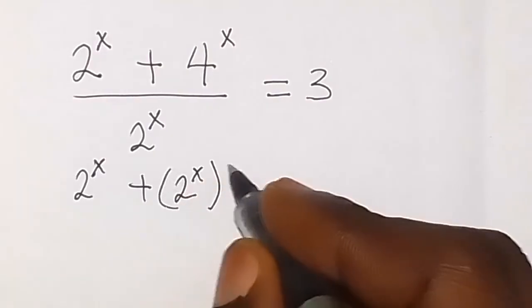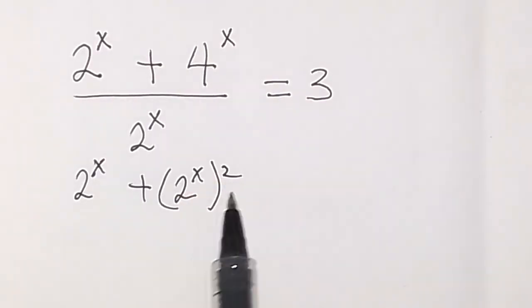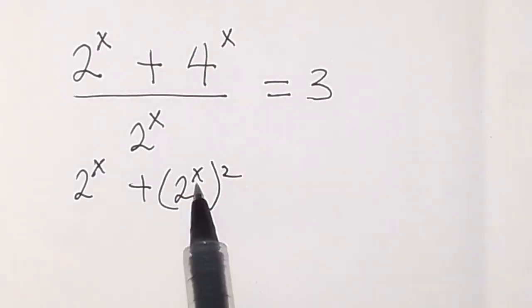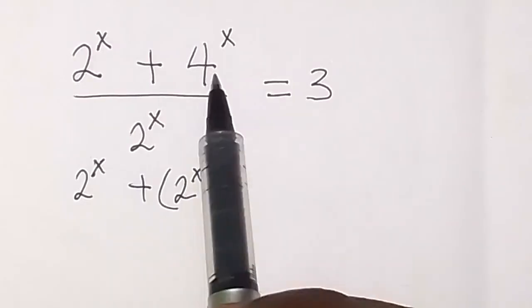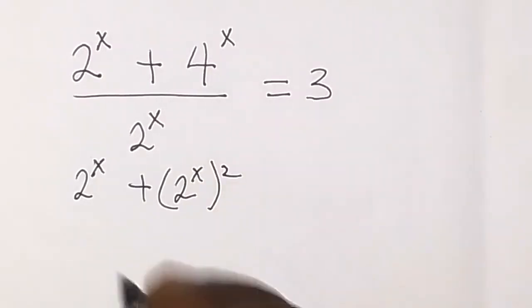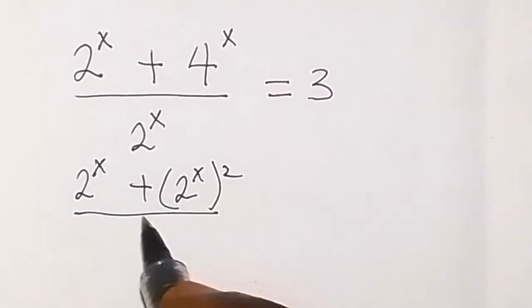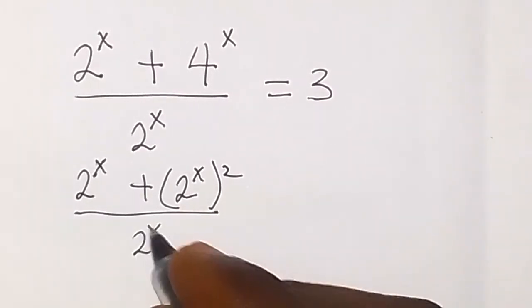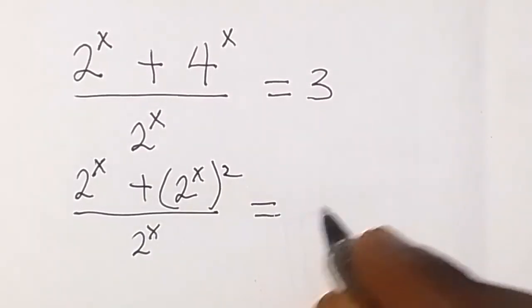Then all raised to the power 2, because when you multiply this, 2 raised to the power 2 will give us 4, then 4 raised to the power x, then divided by 2 raised to the power x, then equals to 3.